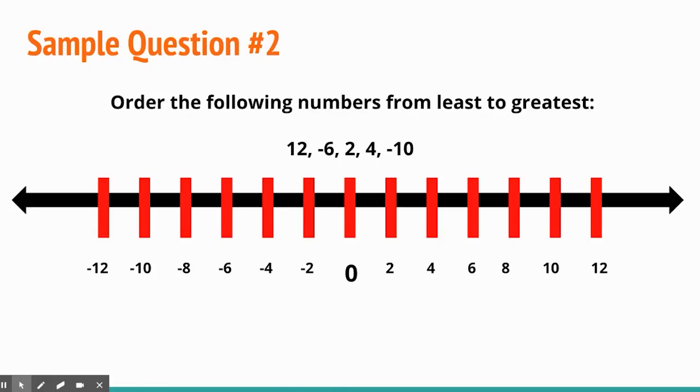All right, let's look at sample question number two. It says, order the following from least to greatest, 12, negative six, two, four, and negative 10. Now the most common mistake is that someone is just going to write two, four, negative six, negative 10, 12, because they're looking at just the whole number parts and forgetting the negative signs and how the negative signs generally mean opposite. So instead of being 12 spaces, 10 spaces to the right of zero, it is now 10 spaces to the left of zero, making it that negative.